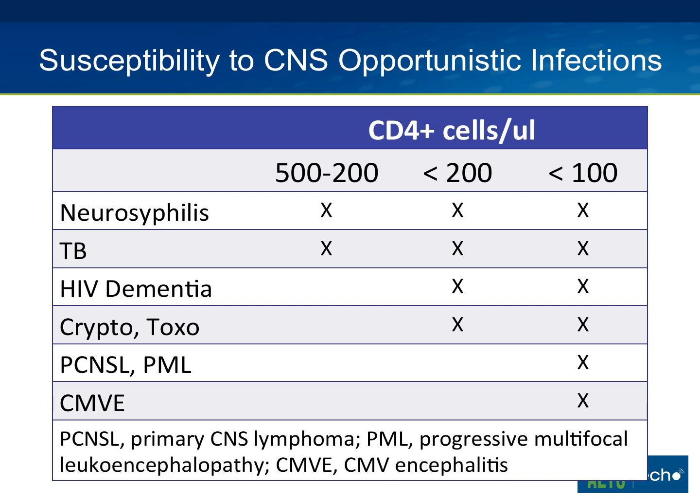People without a lot of immunosuppression can get neurosyphilis or CNS TB, which become more common as the CD4 drops. For neurosyphilis, a CD4 cutoff of 350 is when patients are at increased risk. For HIV dementia, cryptococcal meningitis, and toxoplasmosis, patients are generally significantly more immunocompromised — typically CD4 below 200. For cryptococcal meningitis specifically, the risk really goes up at CD4 below 100.